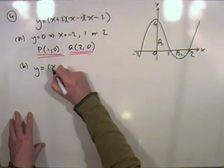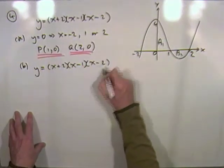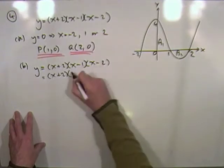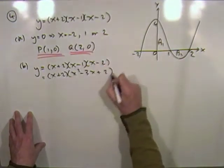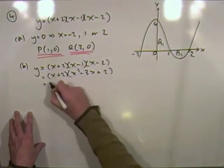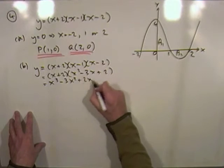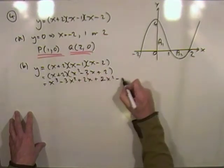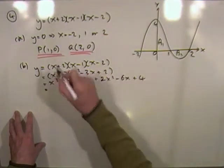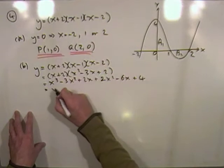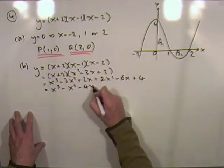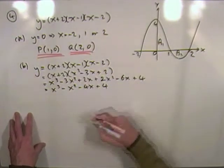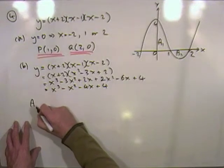Before integrating I need separate terms, so I'll expand the brackets. Leaving the first factor and multiplying the other two: (x − 1)(x − 2) = x² − 3x + 2, then multiplying by x gives x³ − x² − 4x + 4 after collecting terms.